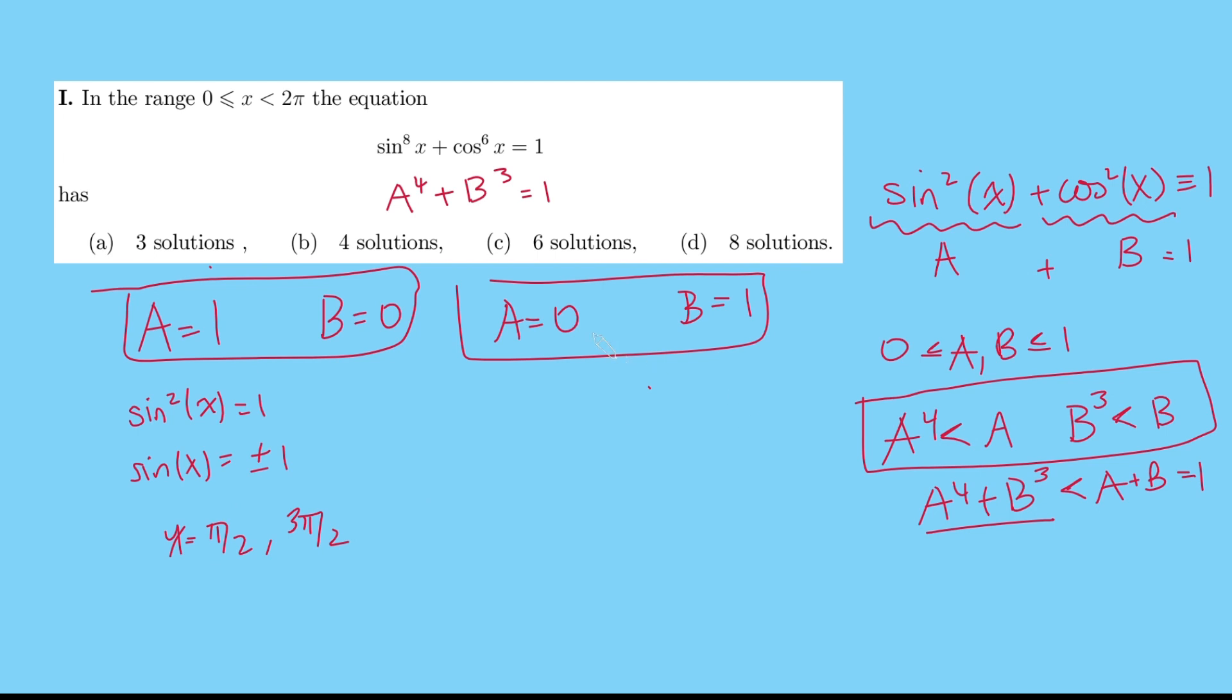Now how about this other scenario, when A is 0 and when B is 1? Well, A again is sin of x, so sin of x is 0, that means x is 0 and x is pi. And so B then will be 1 or minus 1, in those scenarios.